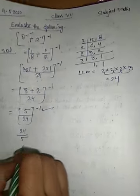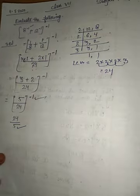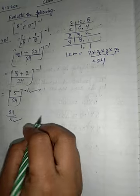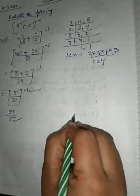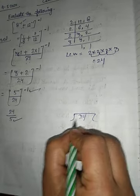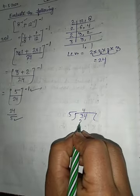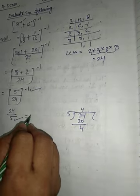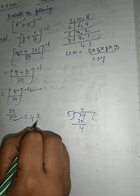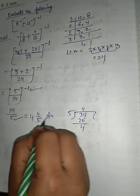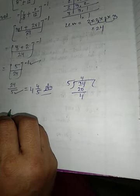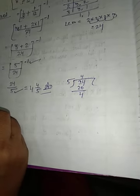Now 24 upon 5 — the denominator is less than the numerator. So what do we have to do? We have to do division here. 24 divided by 5: 5×4 is 20, remainder 4. So the answer is 4 whole 4 upon 5. Now let us take another example.